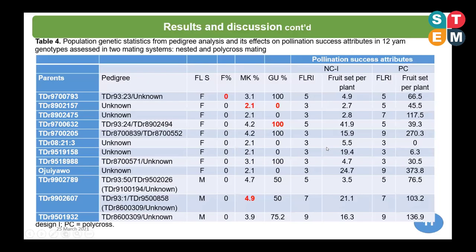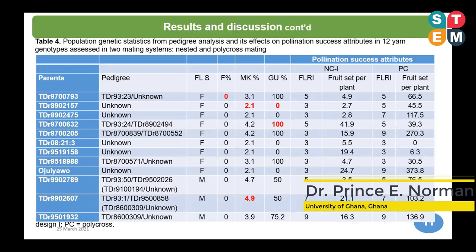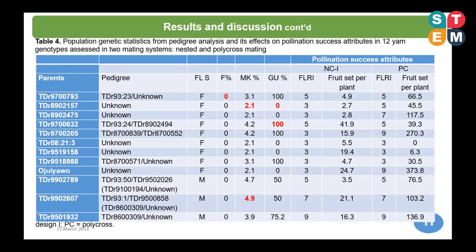Looking at the relationship, the inbreeding coefficient is zero since we are dealing with unrelated genotypes. The mean kinship is low, ranging from 2.1 to 4.9, and genome uniqueness ranges from 0 to 100 percent. These low population statistics values indicate a low degree of inbreeding observed in the studied populations. We can see they are generally low, and in the next slides I will show lots of other relationships.